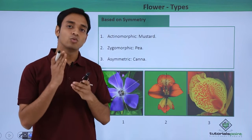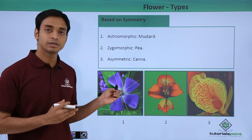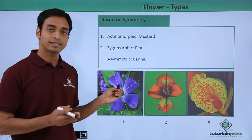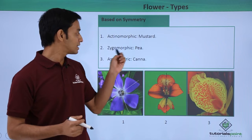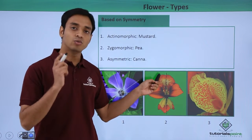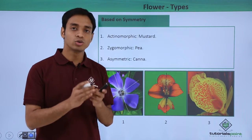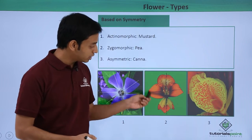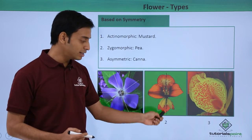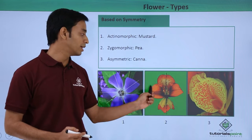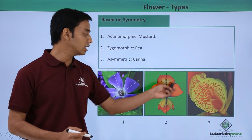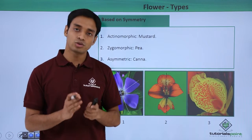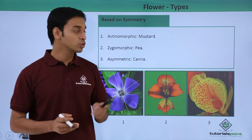The second type is known as zygomorphic flowers. Here the symmetry is only in one plane. Unlike actinomorphic flowers which can be divided into two equal halves along any plane through the axis, zygomorphic flowers can only be divided into two equal halves in one specific plane. As you can see in this picture, only when we divide the flower in this particular plane will it be divided into two equal halves.